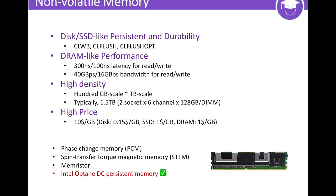Emerging non-volatile memory is blurring the line between memory and storage. These kinds of memories, such as Intel Optane DC Persistent Memory, PCM, and STT-RAM, are byte-addressable and provide DRAM-like performance, high density, and persistency at the same time.